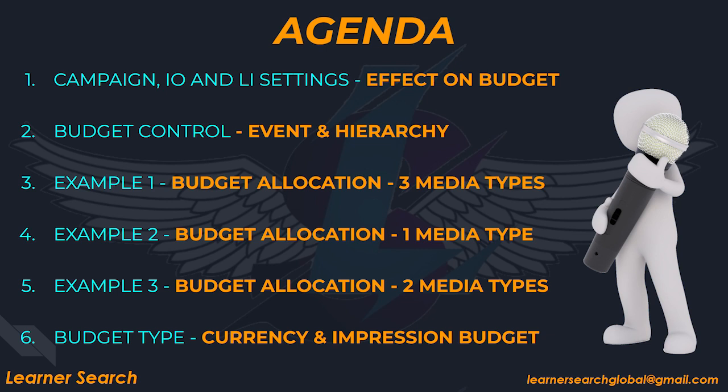Agenda of this video. Firstly, I will show you campaign IO and line item settings and how it affects budget allocation. Secondly, we shall take a real-time event as an example to understand budget control and compare with platform hierarchy. Then, I will explain this concept by taking various examples.